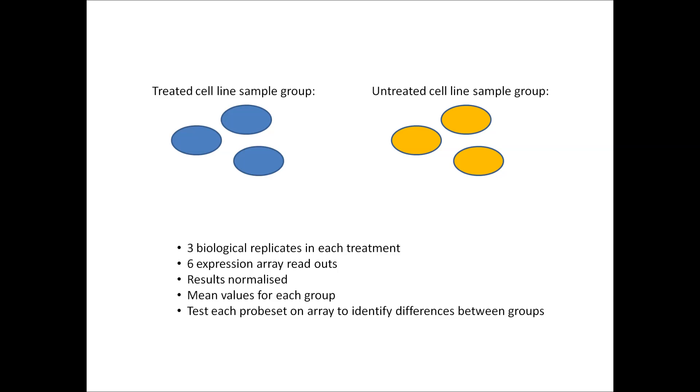The results that you have are normalized expression values for each probe set. The probe sets are a set of clustered probes that are commonly situated at the three prime end of gene transcripts. A statistical test compares the mean of the expression values in the treated sample compared to the mean expression of values in the untreated sample.